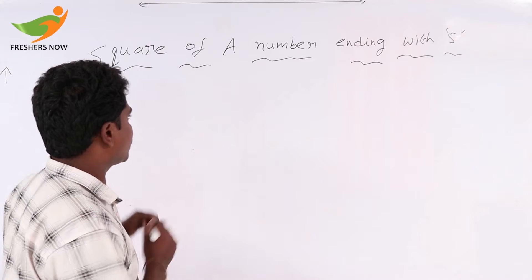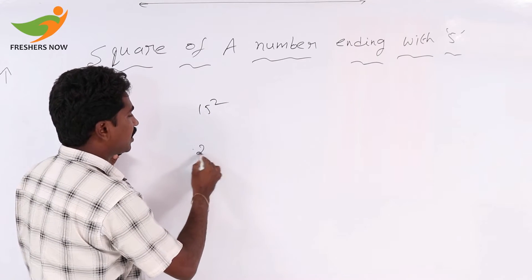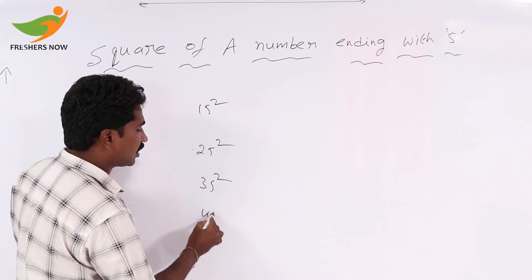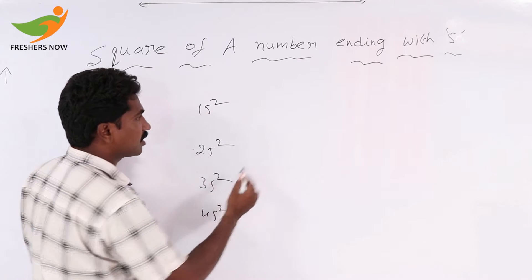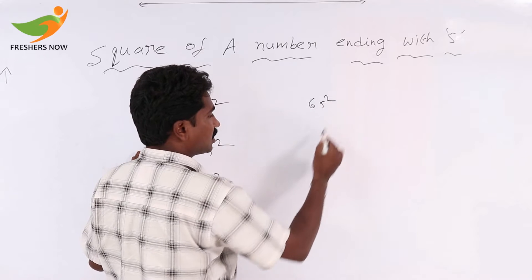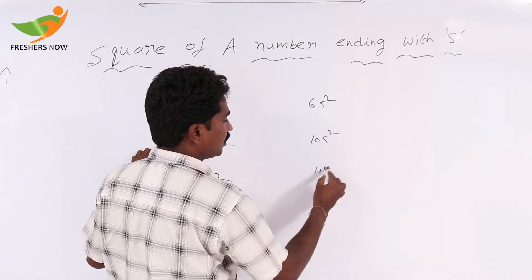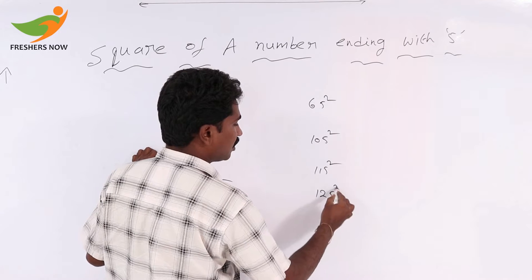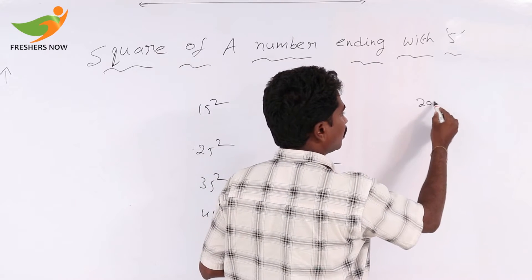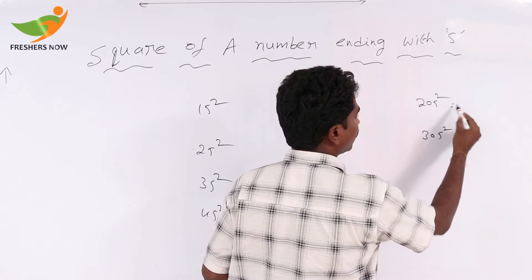Now we discuss the squares of 15, 25, 35, 45, 65, 105, and 305.